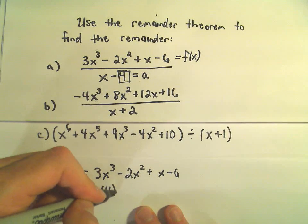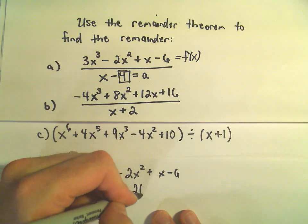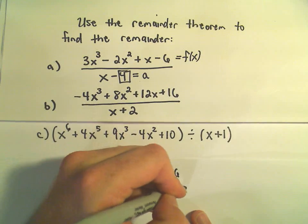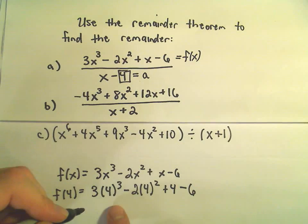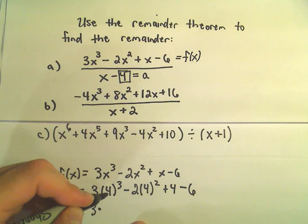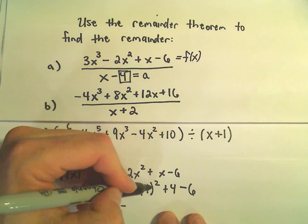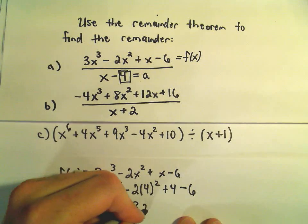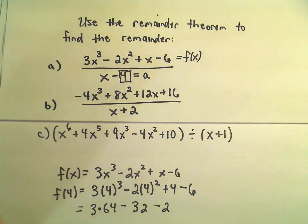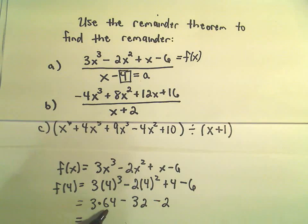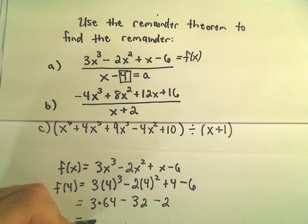So we get 3(4³) - 2(4²) + 4 - 6. 4³ is 64, 4² is 16 times negative 2 will be 32. Positive 4 and negative 6 is negative 2. 3 times 64, that would be 180 and 12.